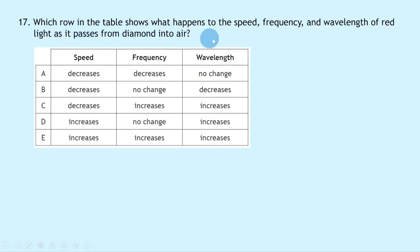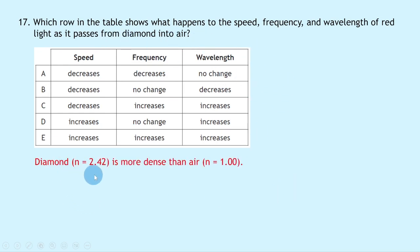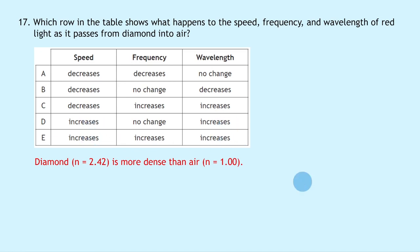Question 17: Red light passes from diamond (refractive index 2.42) into air (refractive index 1), going from more dense to less dense. Speed increases, so we consider options D or E. Wavelength does the same as speed and also increases. Frequency always stays the same — no change. This gives answer D.